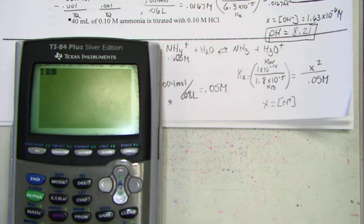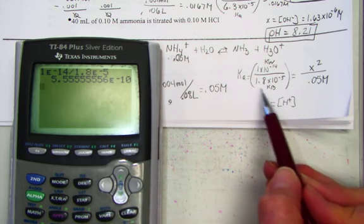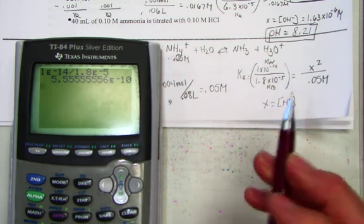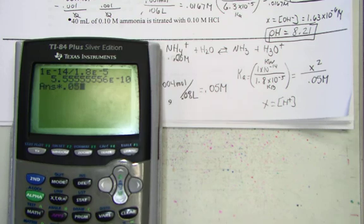So, 1e-14 divided by the known Kb for ammonia, 1.8e-5. It has now been converted from a Kb into a Ka. We'll cross-multiply by the 0.05 molar concentration of the ammonium ion, and now that's equal to x squared.